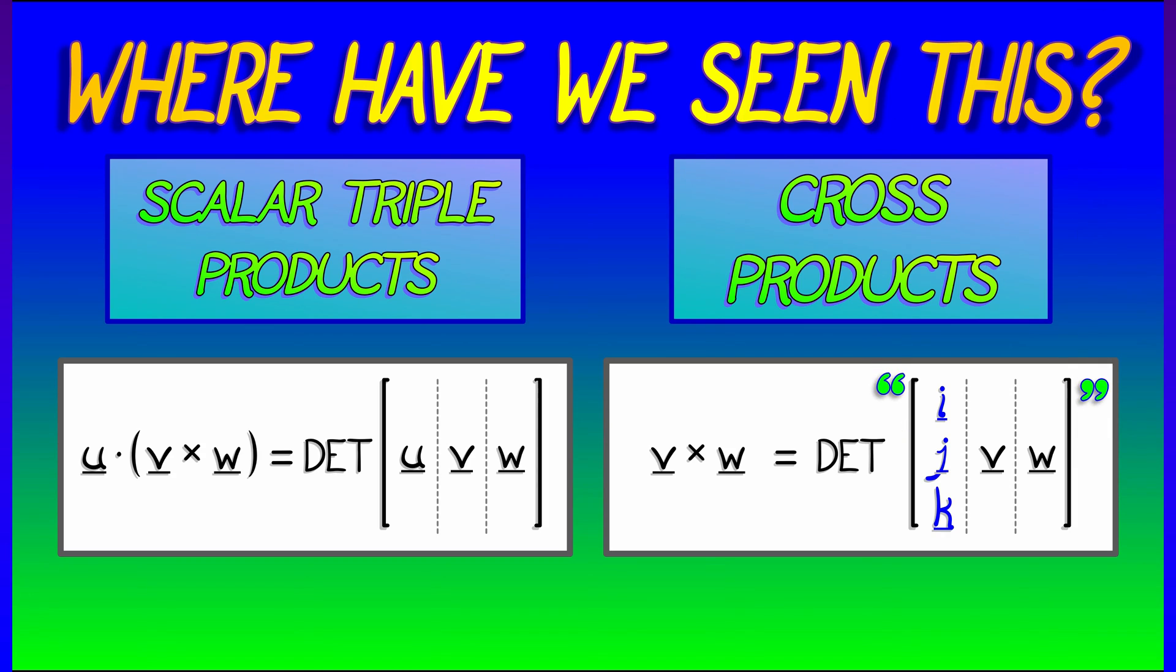Now that's not really a vector. It's a vector of basis vectors. So this is kind of not quite on the level, but this is a great way to remember the formula for cross product in terms of determinants.